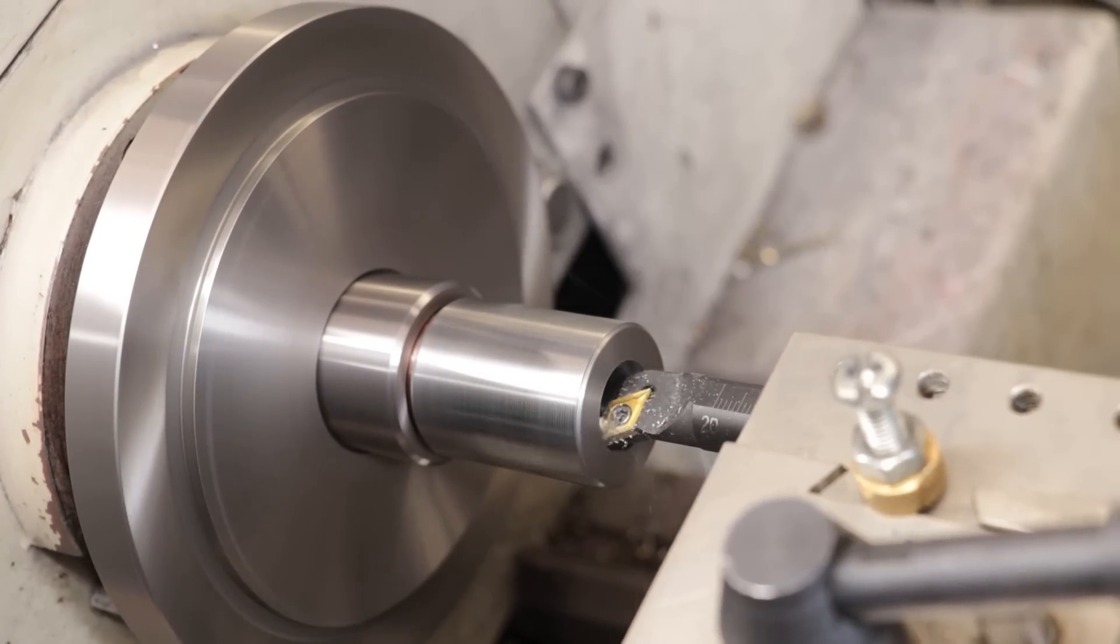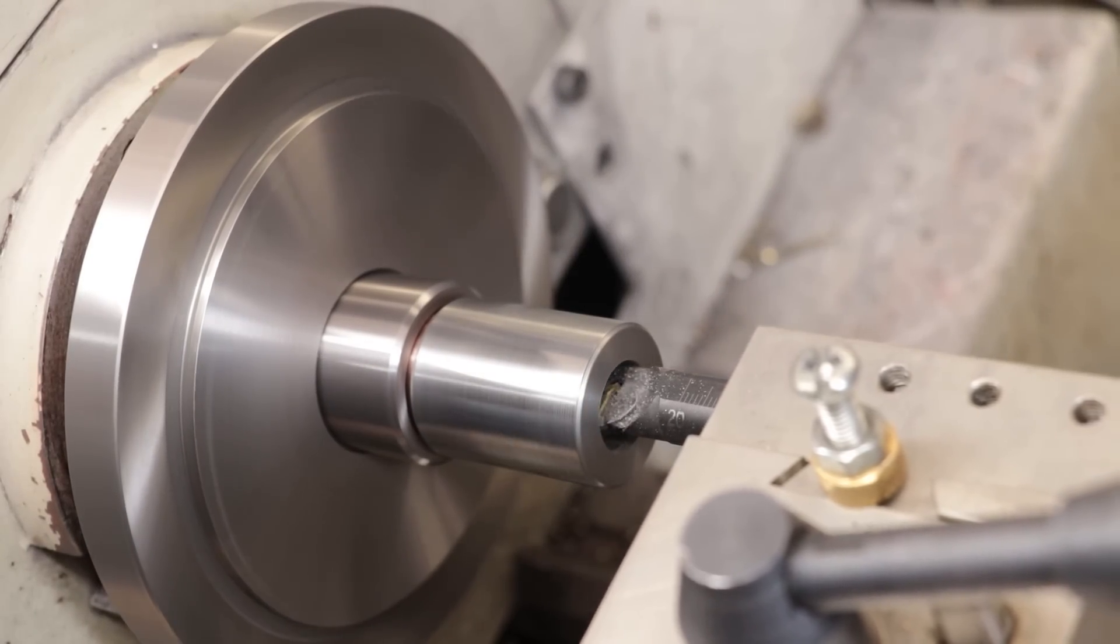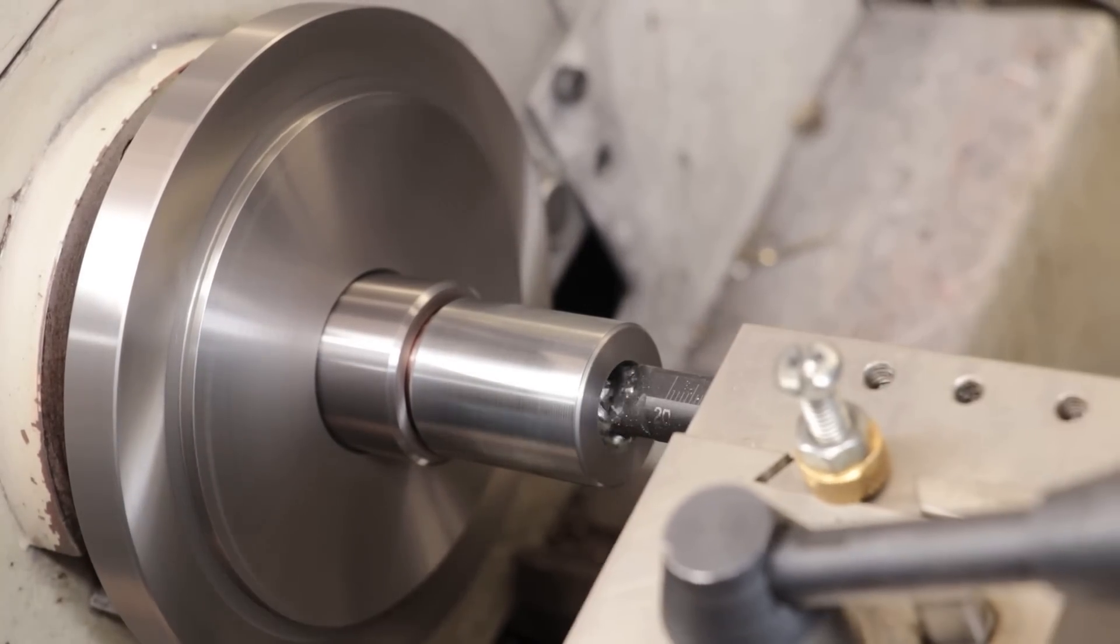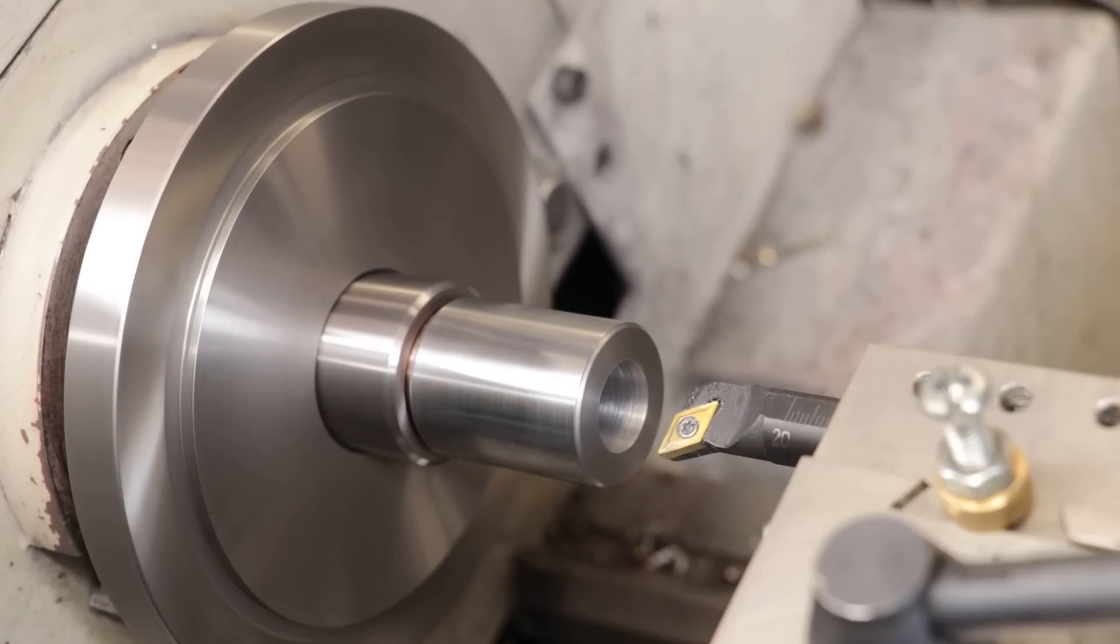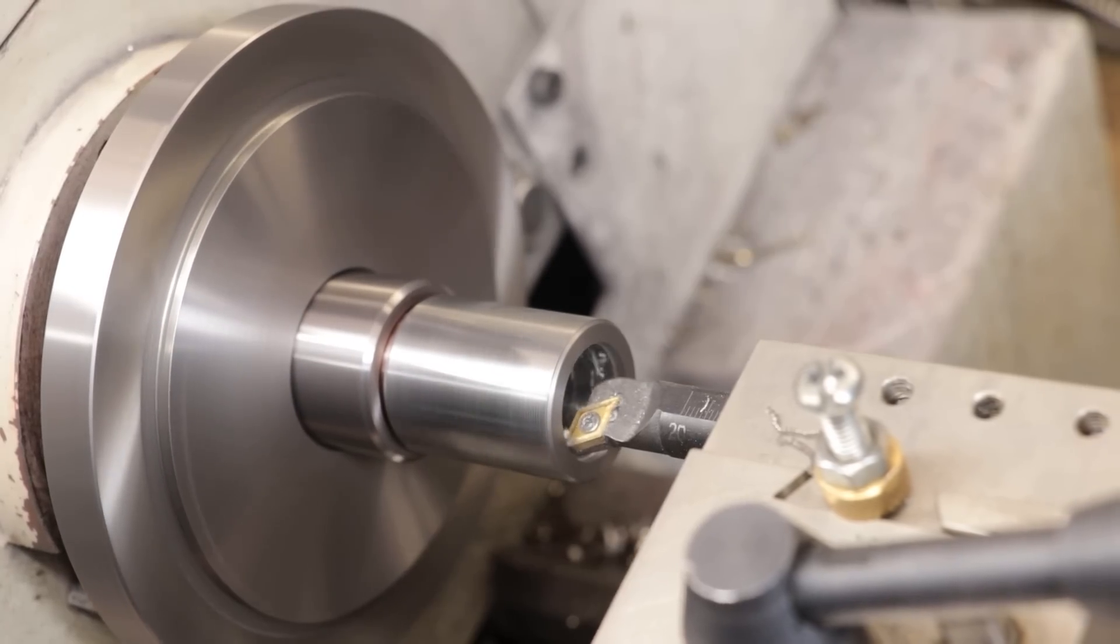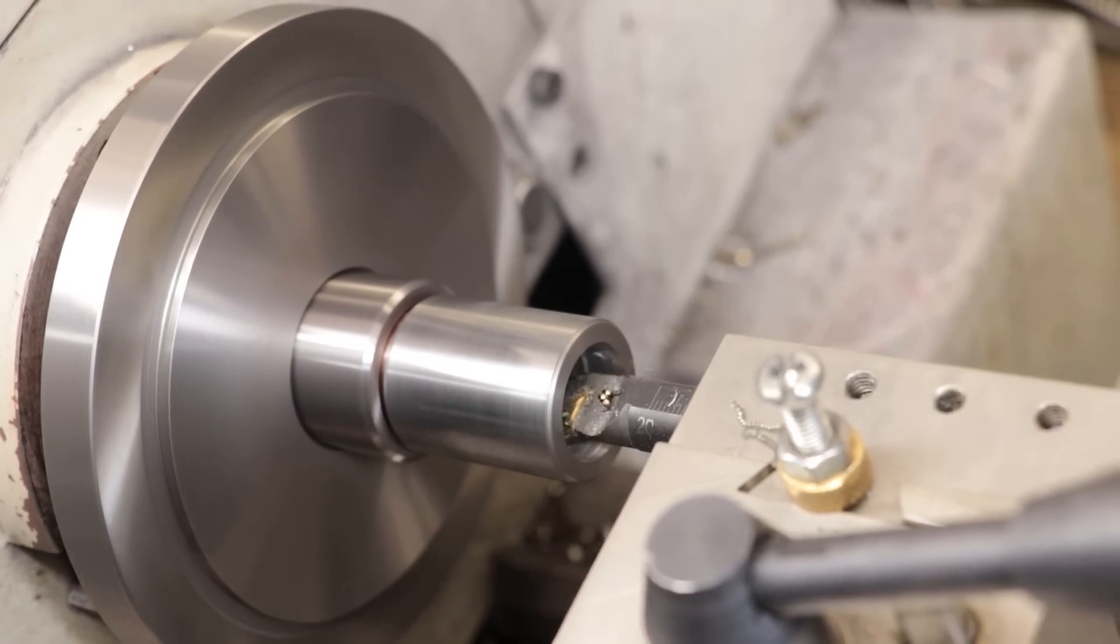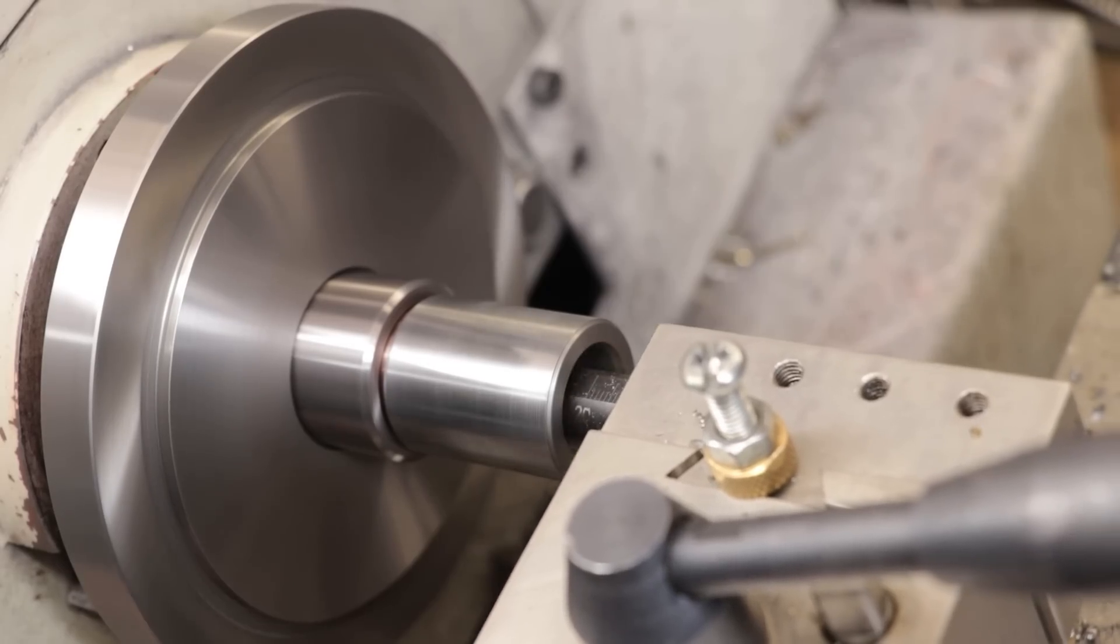Finally I can turn down the bore to accept the ball bearings. I'm going for a press fit here so the bore needs to be very accurately turned. The back face is also relieved ever so slightly towards the middle to stop the bearing from rubbing up against it.